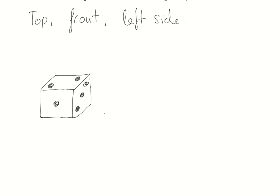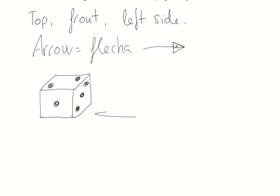First of all, we have to take into account where is the arrow. What is an arrow? An arrow is 'fleta' in Spanish. The arrow typically shows us where is the front. If my arrow is here, this is the front view. And in consequence, this will be the top, and of course, this will be the left side.